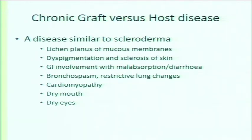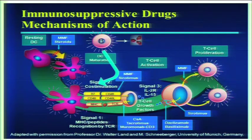GVHD is why a transplanter who is gung-ho is not someone you should trust. A transplanter who thinks 20 times before taking a patient for transplant is who you want. Seeing one patient suffer through severe GVHD makes you stop and reflect on what you have done. The treatment of GVHD spans a broad repertoire of immunosuppressive drugs.